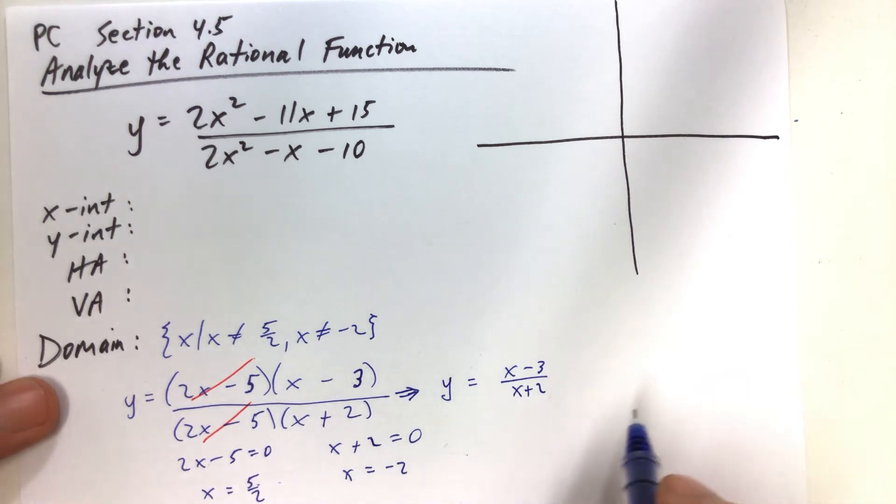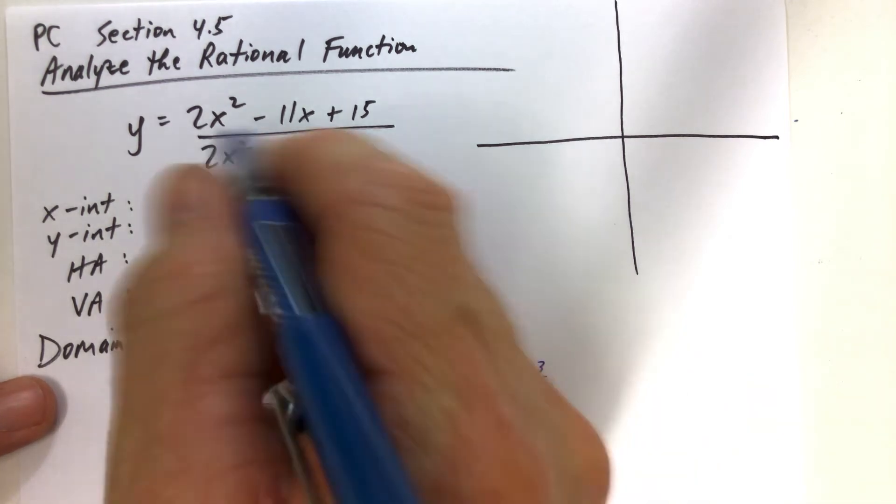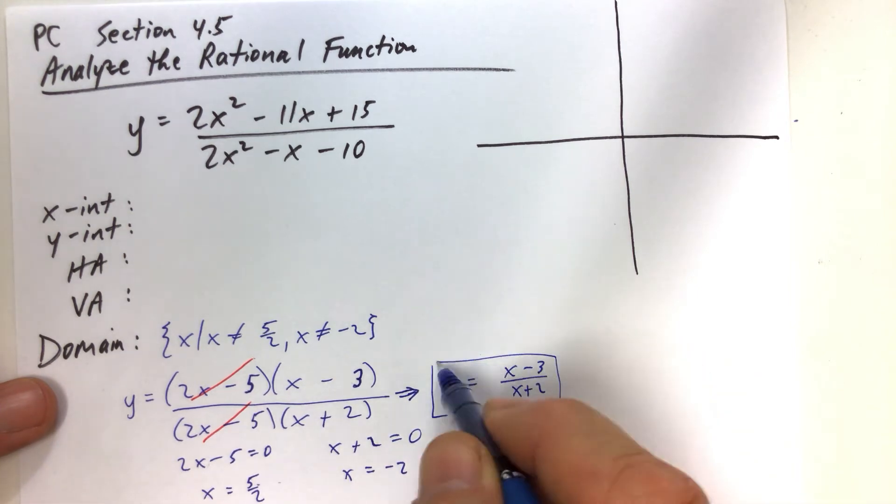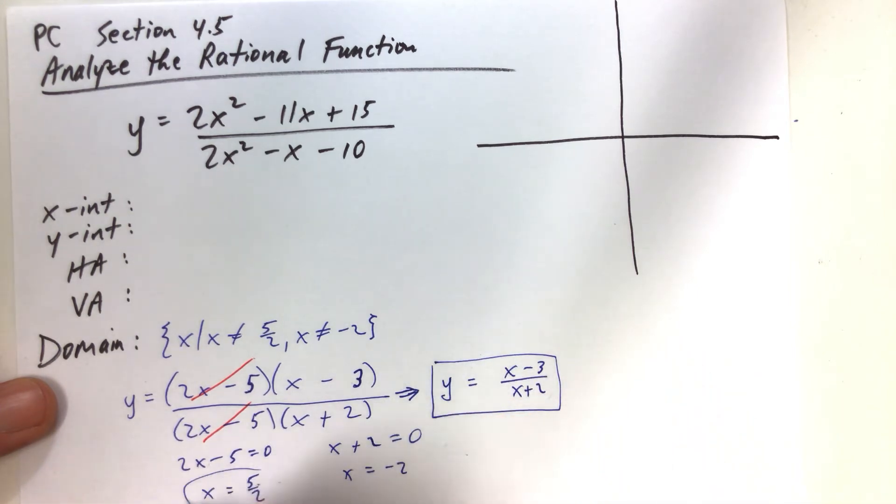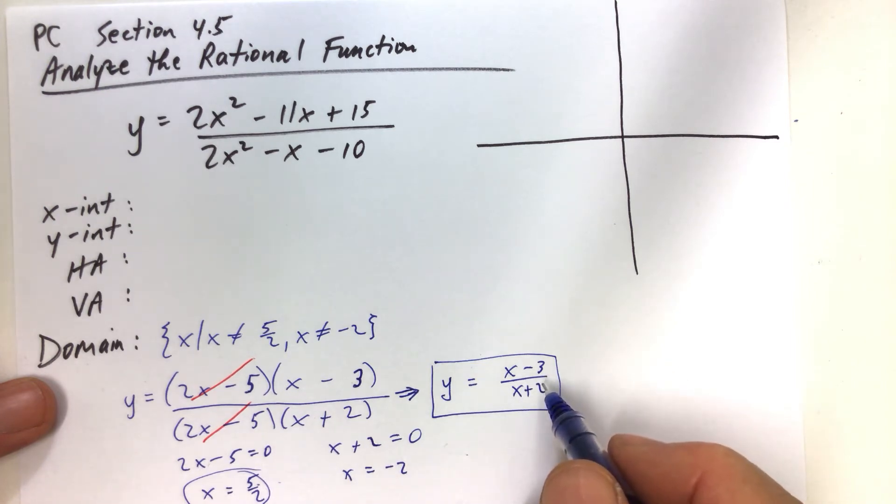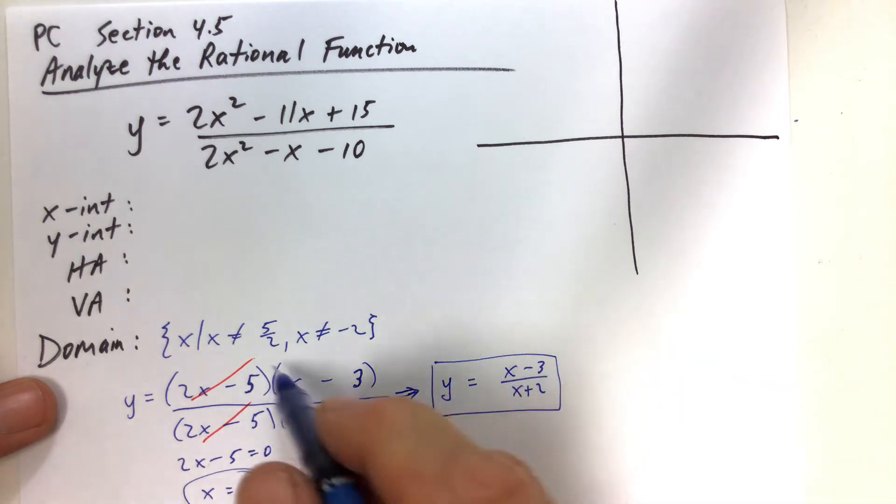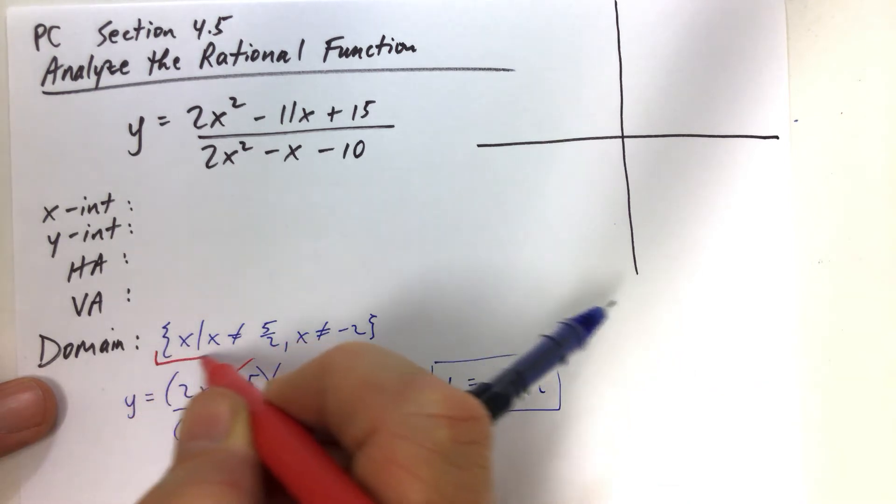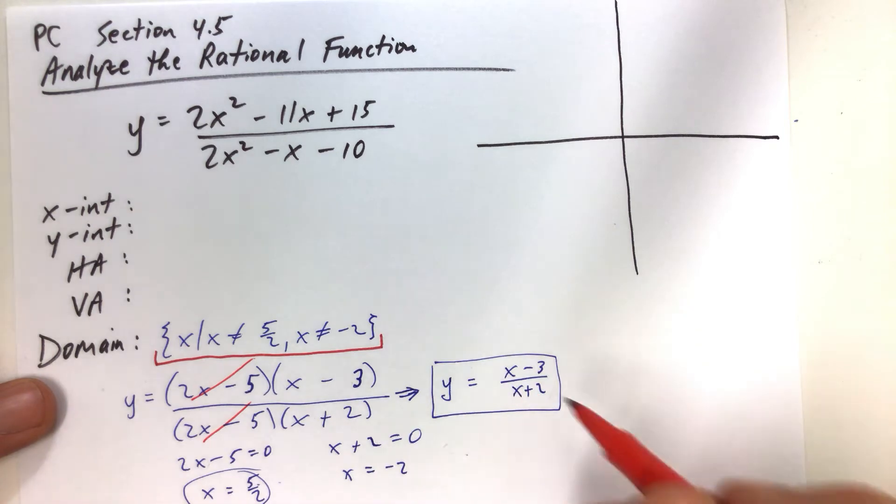So the deal is here that this function is going to look just like this function, with the exception of when x is equal to 5 halves, there's going to be a hole in the graph. So we're just going to draw this graph in its reduced form, and analyze the whole function in its reduced form and not worry about what it was originally, other than, because we already have identified what the domain is. So let's keep going here.